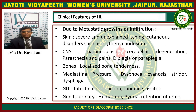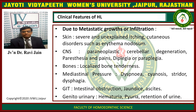Due to metastatic growth or infiltration, there are various symptoms. Skin symptoms include severe and unexplained itching with cutaneous disorders such as erythema nodosum. In the CNS there is paraneoplastic cerebellar degeneration, paresthesia, and pain with diplegia or paraplegia. In bones there is localized bone tenderness. Mediastinal pressure causes dyspnea, cyanosis, stridor, and dysphagia. In the GIT there is intestinal obstruction with jaundice and ascites. In the genitourinary system there is hematuria, pyuria, and retention of urine.